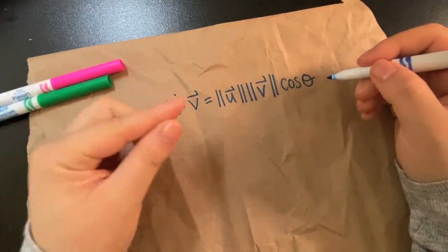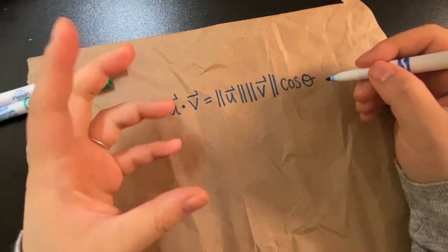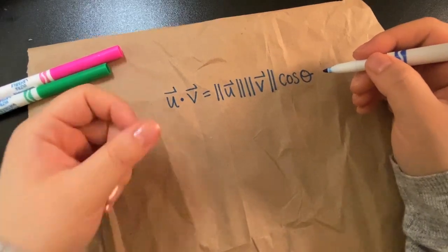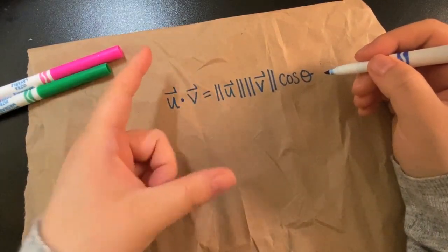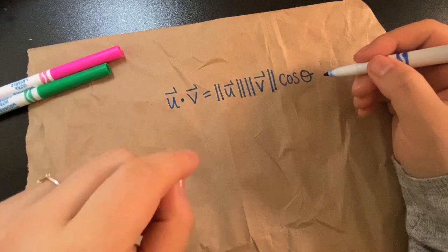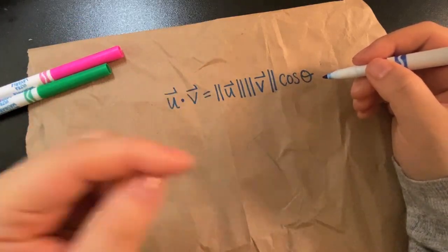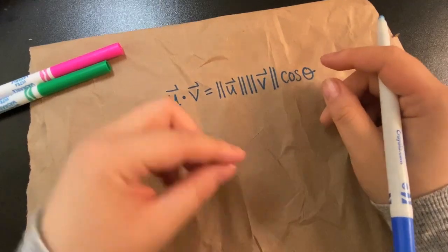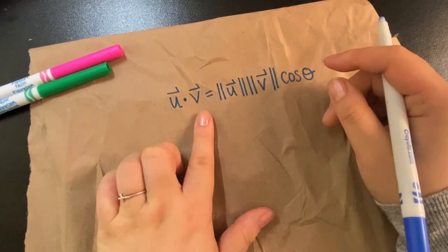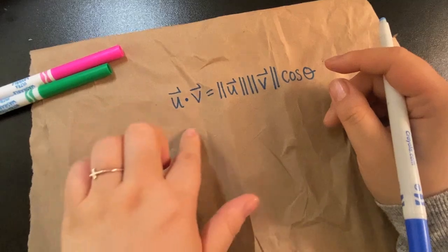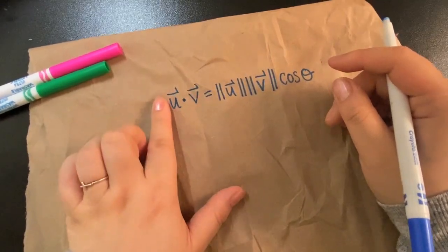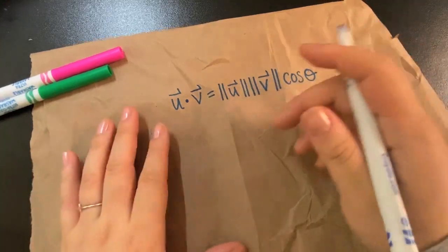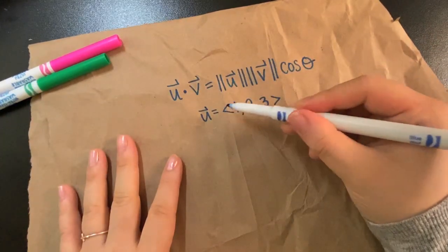Now remember, vectors are this object that has a length and a direction. So the magnitude is the length of that thing, and it's pointing in a direction. It's like an arrow that has a length.